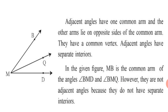In the figure, MB is a common arm of the bigger Angle BMD and Angle BMQ. But Angle BMQ lies inside Angle BMD, so they cannot be called adjacent angles because they do not have separate interiors. Two angles which are coinciding — where one small angle is inside the other bigger angle — cannot be adjacent angles. The criteria for adjacent angles is: having one common arm and separate interiors.